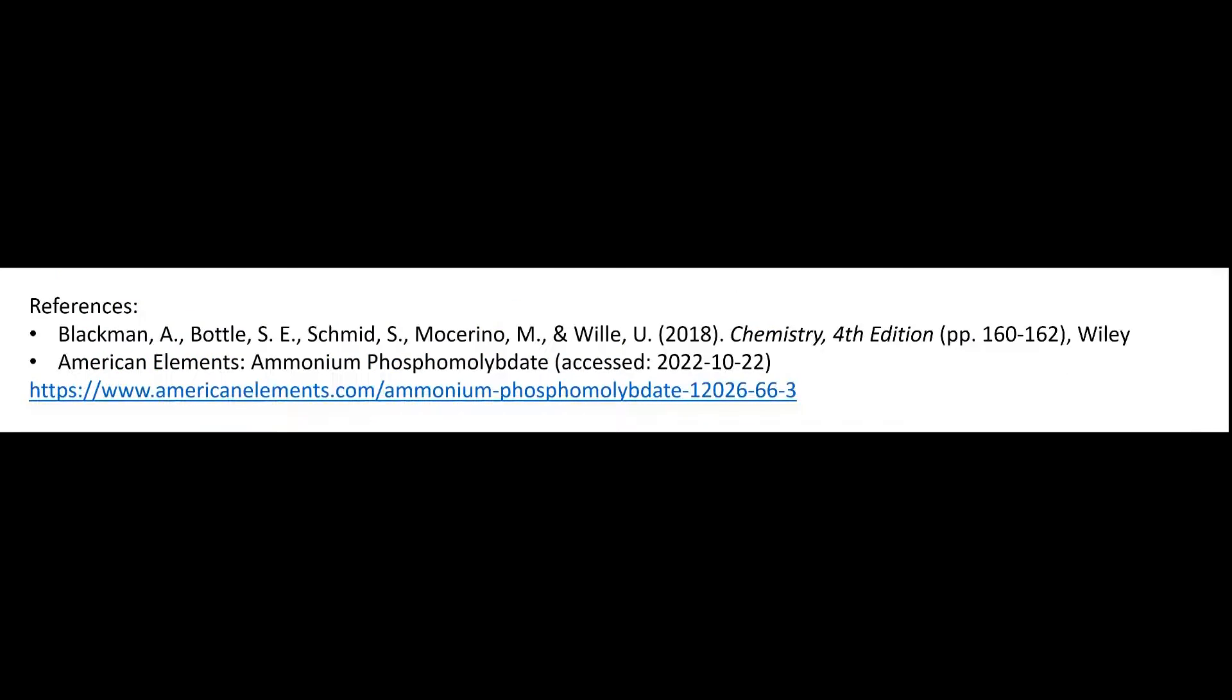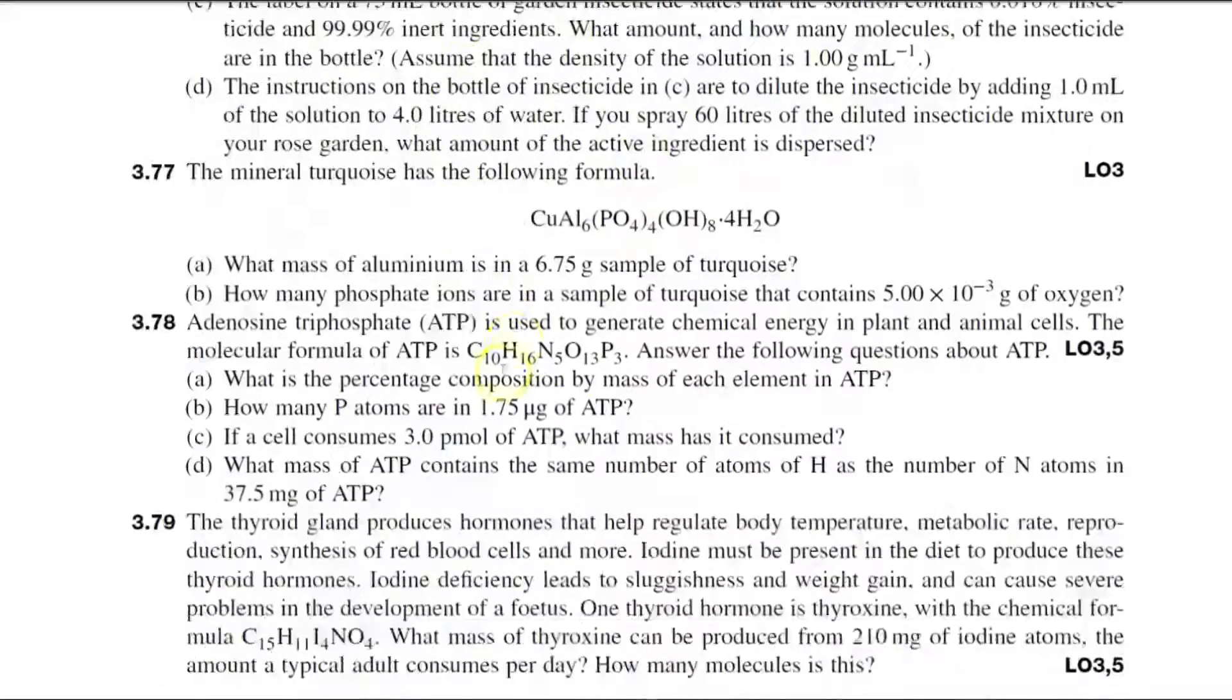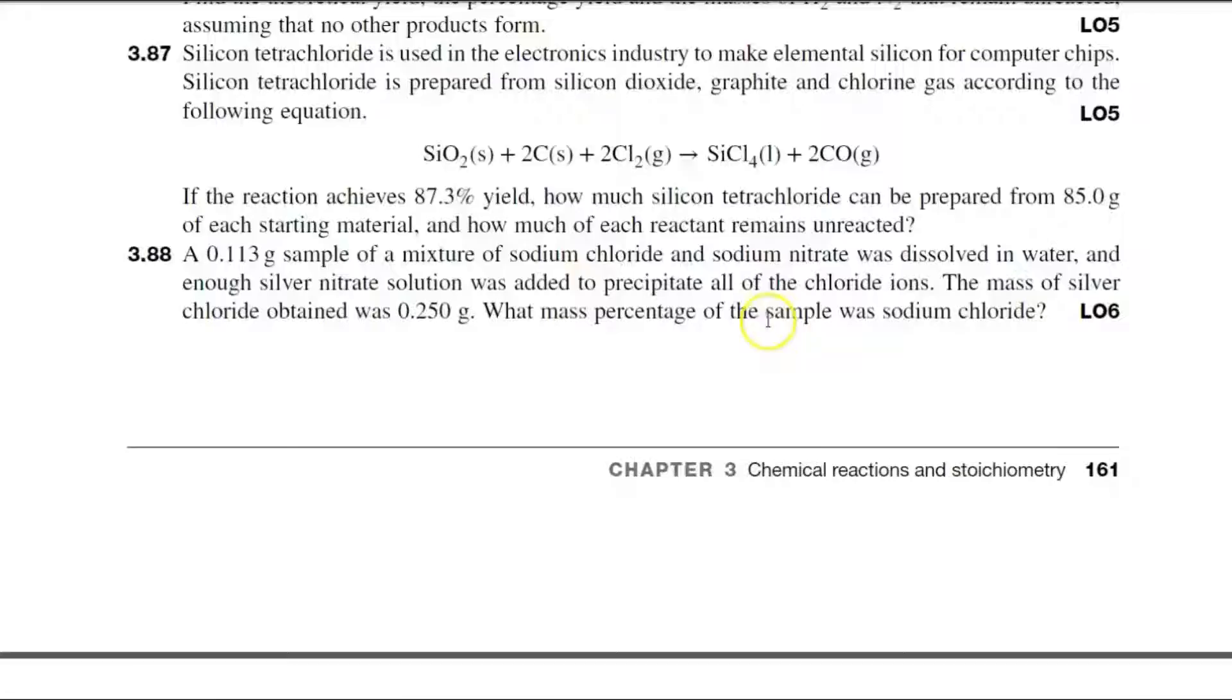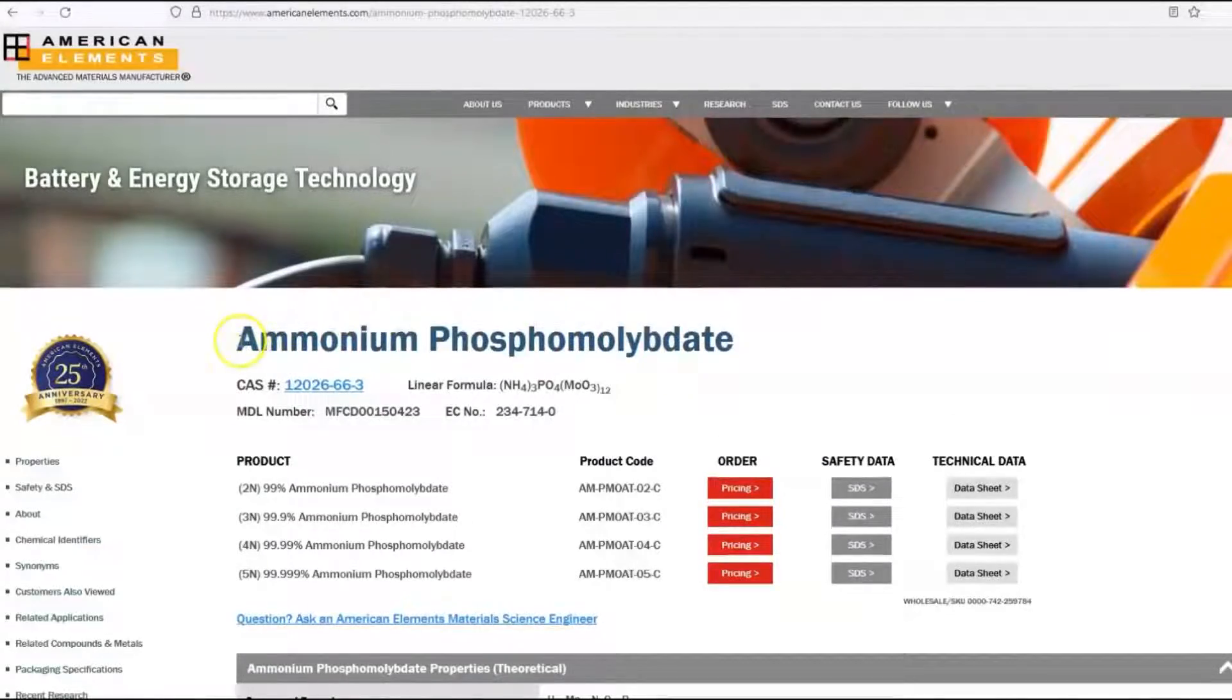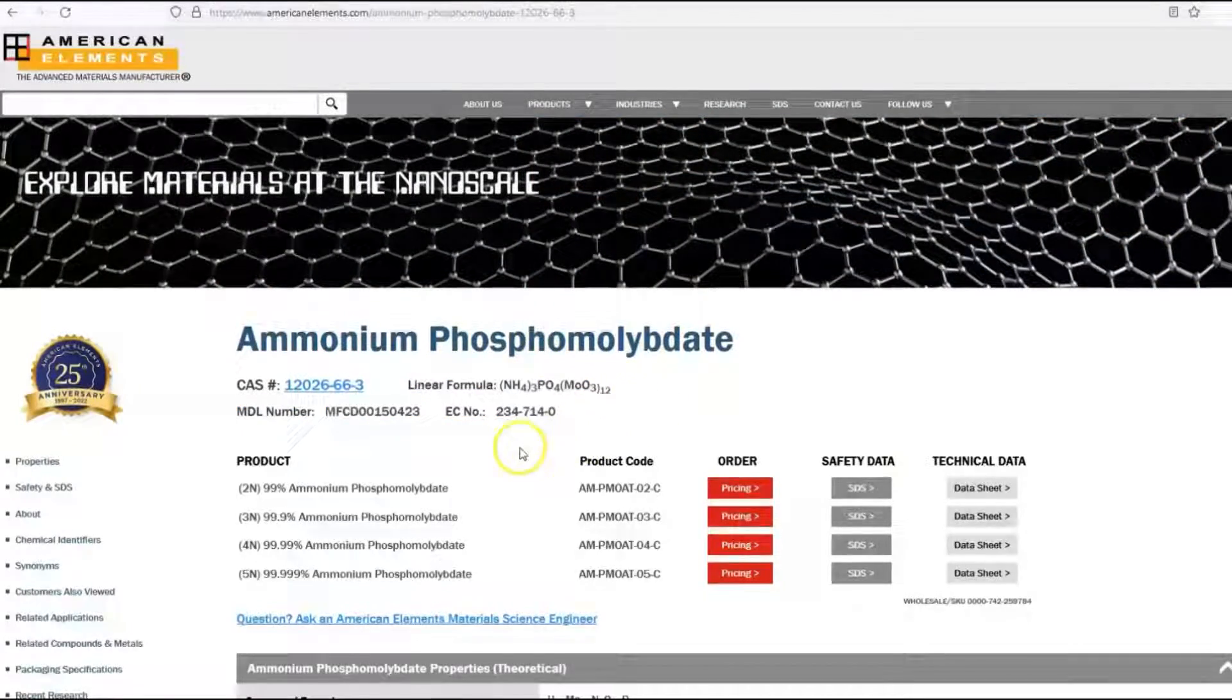For this video, the following references were used. Blackman et al. have questions on chemical equations, yield, and stoichiometry that can be used as practice for these types of problems. They are similar, but not exactly like this particular question, however. The second resource was a website I used to verify the name of the solid precipitate, as the question only states its chemical formula.